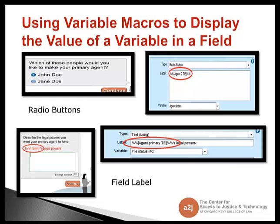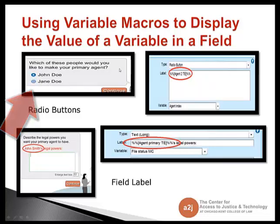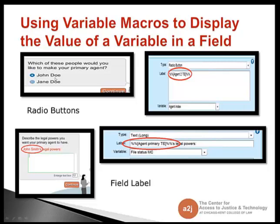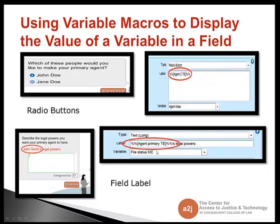The third way to use variable macros is to display the value of a variable in a field — there are two options: radio buttons or field label. Here I've used radio buttons for the question: which of these people do you want to make your primary agent? Agent 2 TE is shown in the variable macro format so that it displays their name, what they've selected before. You can also use it for a field label — John Smith was selected as the agent primary TE for their legal powers, so the end user can remember who they're specifically talking about when filling out these documents.